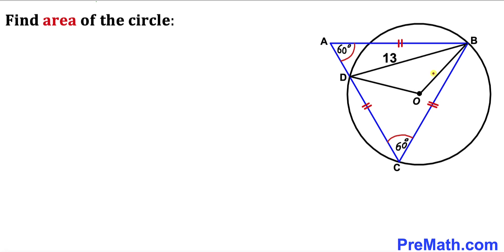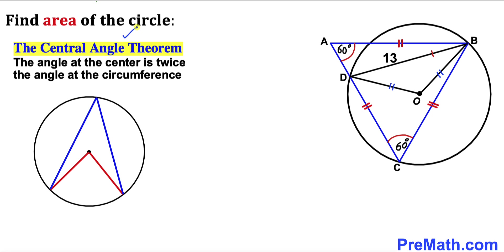We can see that OB is the radius — let's call it lowercase r. Likewise, OD is also a radius, so OD is also lowercase r. Therefore, triangle OBD is an isosceles triangle since side OB is congruent to side OD.